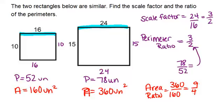So the area ratio is 360 over 160, which reduces to 9 over 4, which is 3 over 2 squared. This makes sense with our earlier observation that the scale factor was 3 over 2 and the perimeter ratio is 3 over 2.